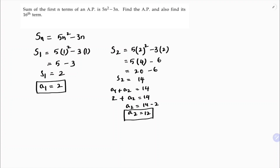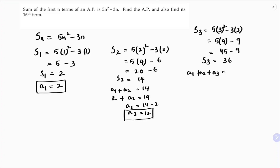To write the AP we need at least three terms, so now I'll find S3. S3 is 5 into 3 squared minus 3 into 3, which is 45 minus 9 equals 36. So S3 equals a1 plus a2 plus a3 equals 36. With a1=2 and a2=12, we have 14 plus a3 equals 36, so a3 equals 36 minus 14, which is 22.